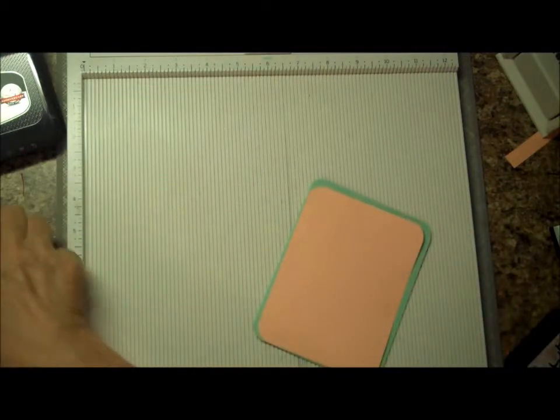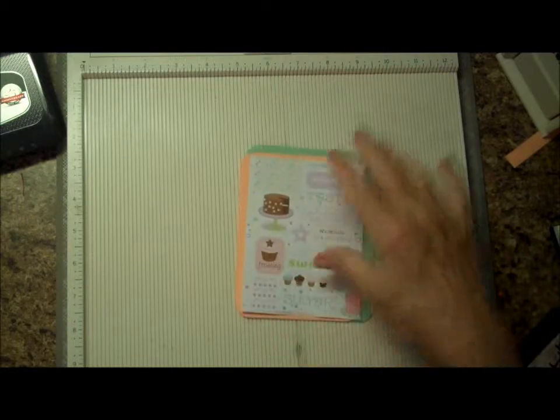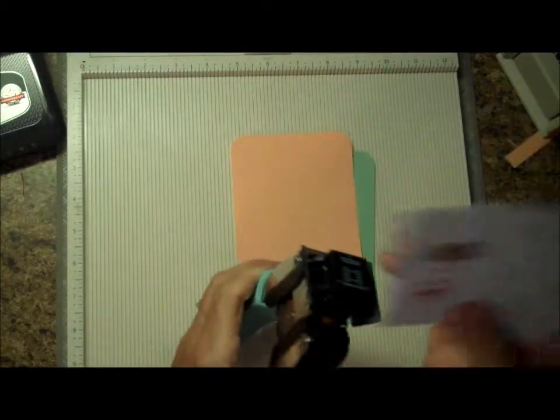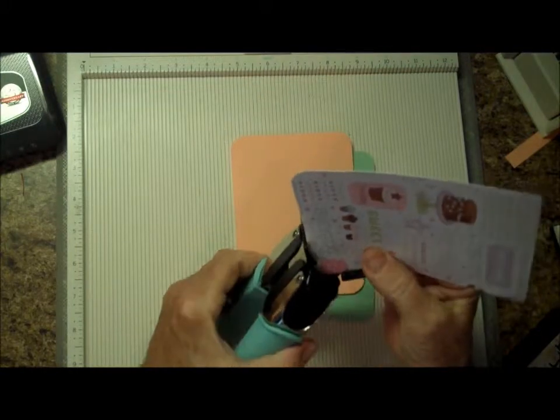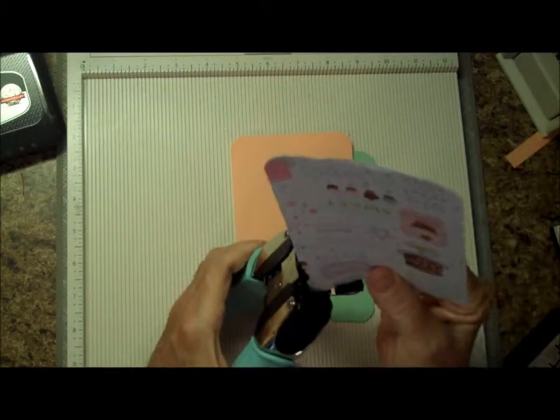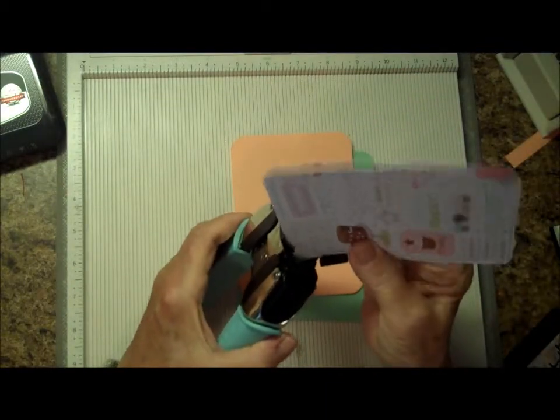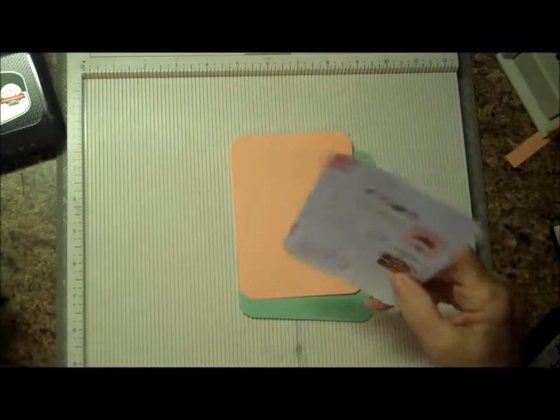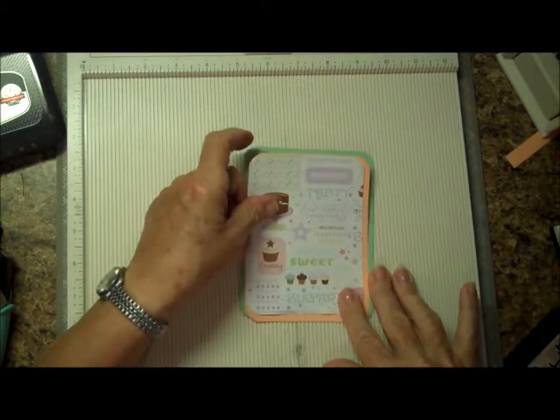And then the next mat is my printed paper and this comes from the Sweets collection. I got that at Michael's when they had them on sale. I think they were 5 for a dollar. Really cute. It has so many different pastel colors in it that it really lends you to making cards of all different colors. And that will layer like this.